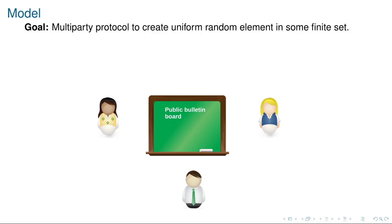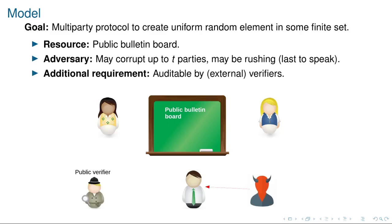To be more concrete about the model: we have n parties that want to create some uniform random element in some finite set, assisted by a public bulletin board where they can publish information. We have an adversary that corrupts up to t parties in the protocol, and what is relevant here is also that the adversary is rushing, so the corrupted parties may be the last to speak in a given round. We also require that the protocol should be auditable by external verifiers.